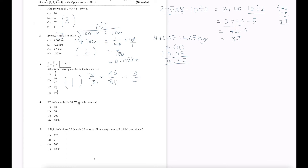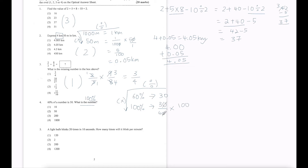Question 4: 60% of a number is 30. What is the number? We're looking for 100%. So 60% equals 30. Using the divide-times method: 30 divided by 60 times 100. We cross-cancel the zeros, then 3 divided by 3 is 1, 6 divided by 3 is 2, giving 100 over 2, which equals 50. The answer is option 2.